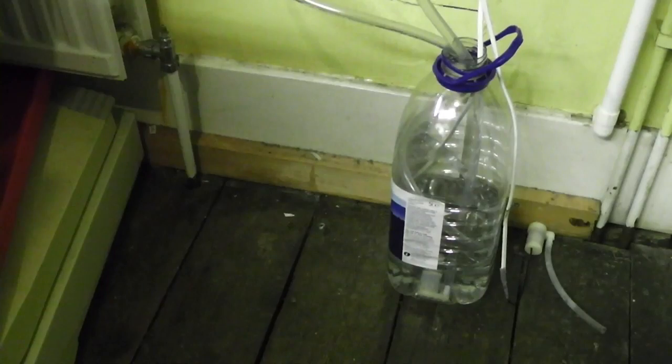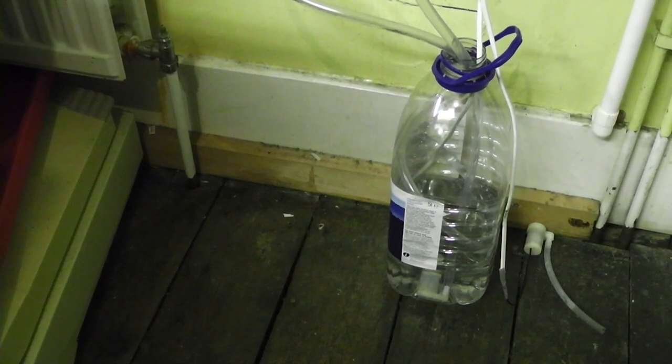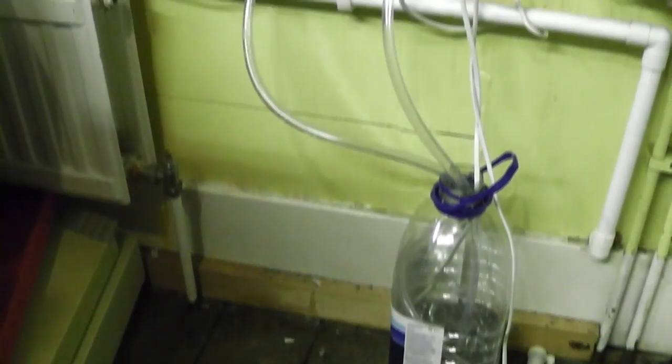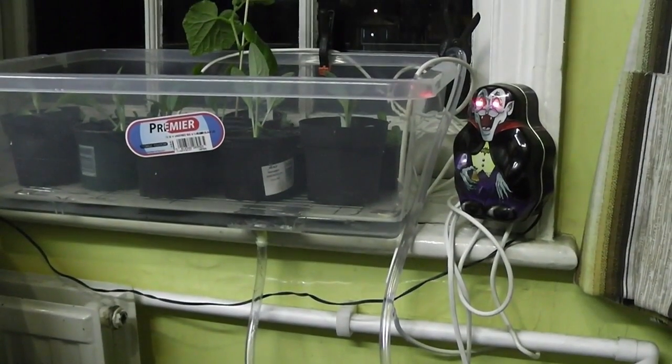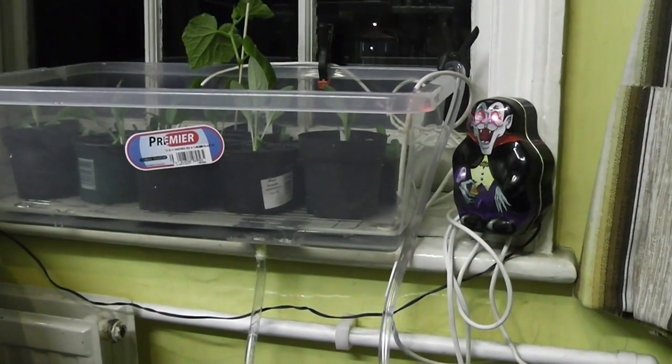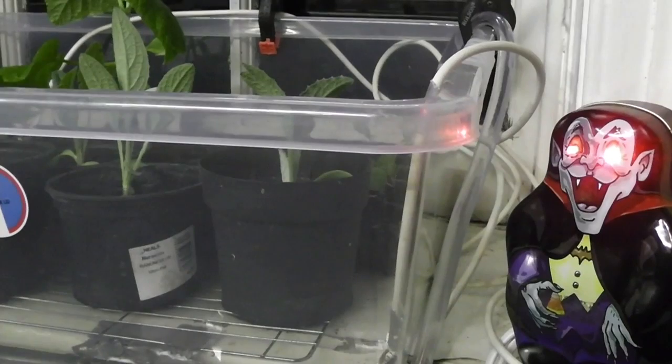That's the pipe which will run into the main water reservoir. Here's the system set up using a 5 litre water bottle as a reservoir. So there's a pump in there pumping water into the tray and then it's gradually draining back down into the same bottle. You can see the eye of the vampire is blinking slightly - that's the water level sensor.